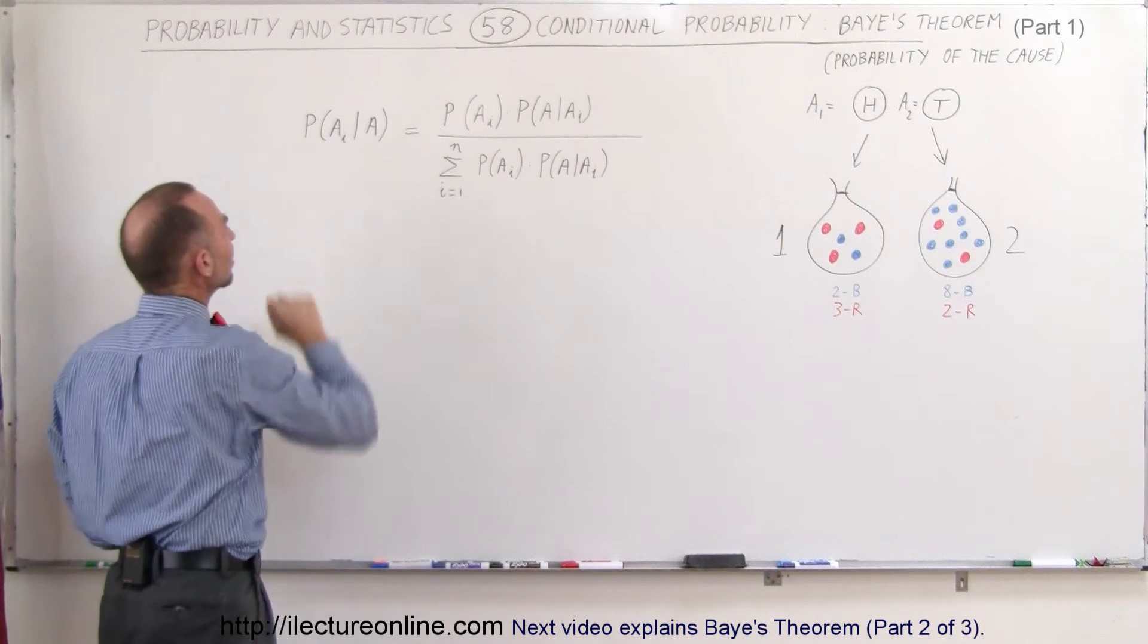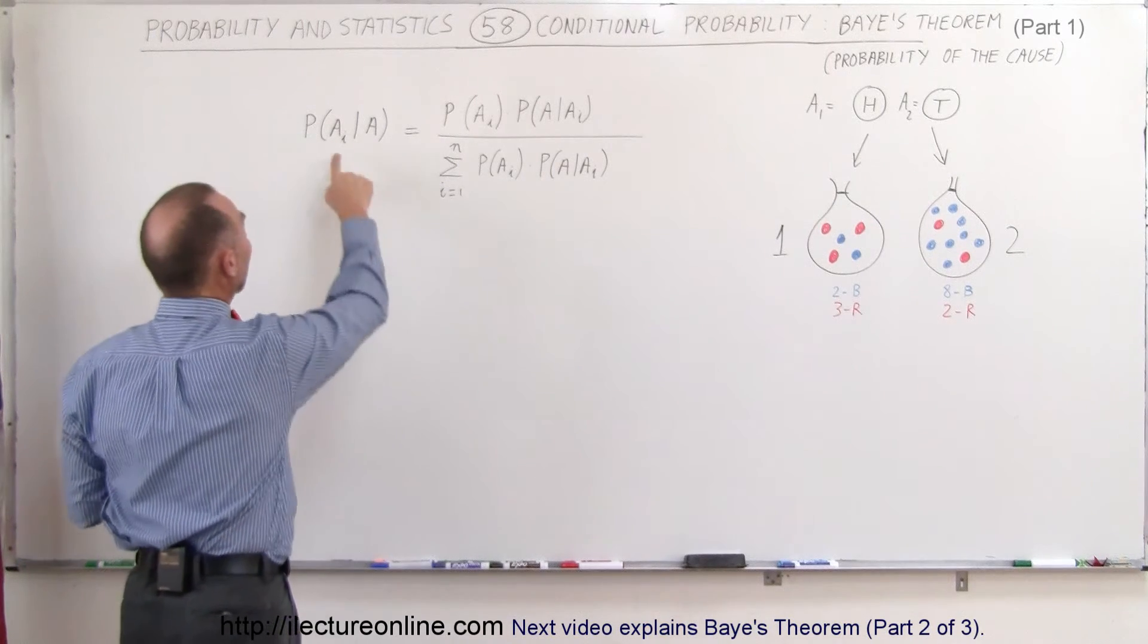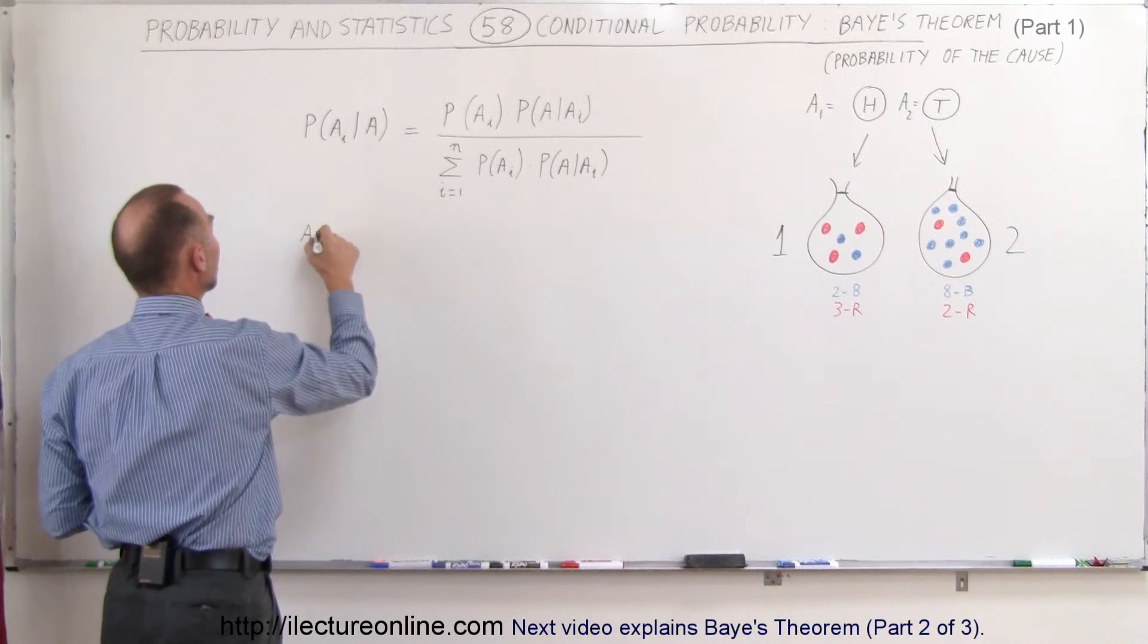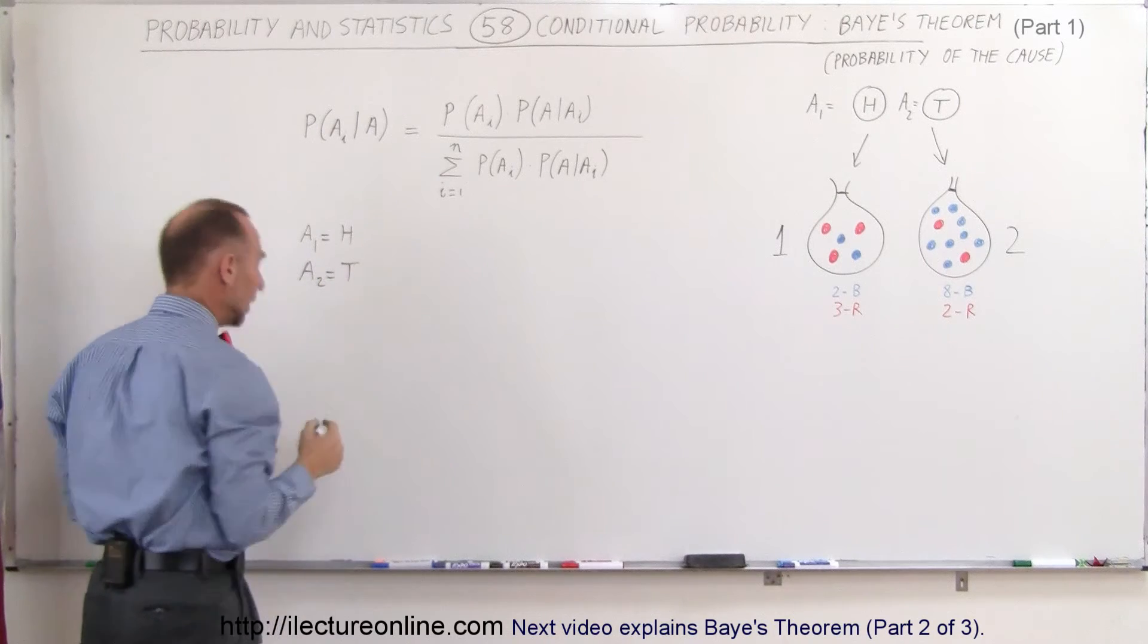So, what we have here is, for example, what is the probability that we have either heads or tails? So, for example, A sub 1 will be equal to heads, and A sub 2 will be equal to tails.